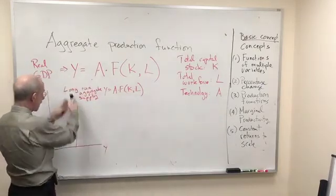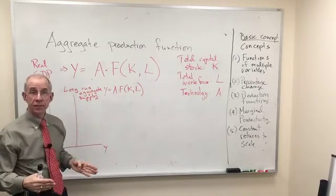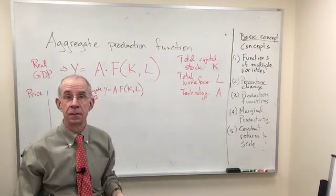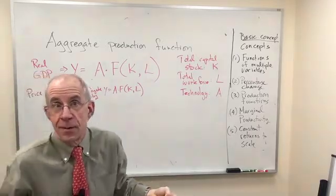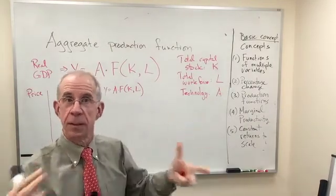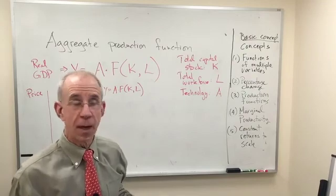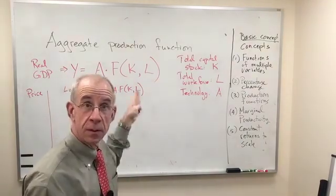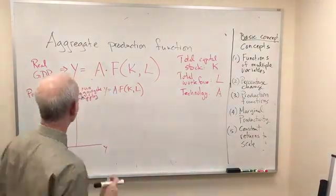This long-run aggregate supply curve doesn't depend on the price level. You could double prices. It's not going to change what you can do if you get everybody working full-time in the most efficient way possible. Instead, it's vertical. Just vertical.